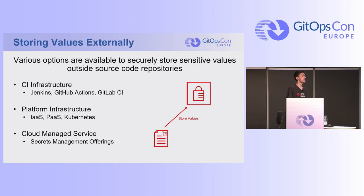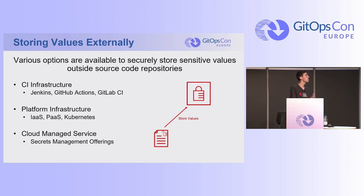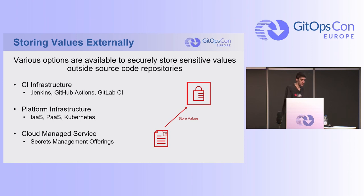The second option is storing values externally. In your CI infrastructure you can use Jenkins, which has secrets management capabilities, or GitHub Actions and GitLab — each has a facility for secrets management. Next is platform infrastructure: your IaaS solution like OpenStack has a secrets management tool, your PaaS solution might have one, Kubernetes has secrets management built in. And if you're using a cloud service, there are options there as well.